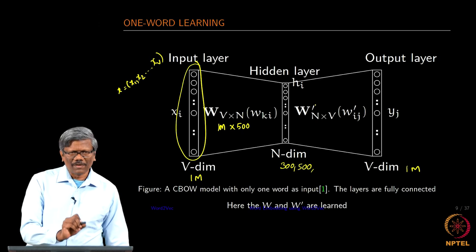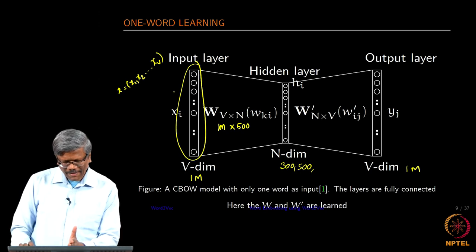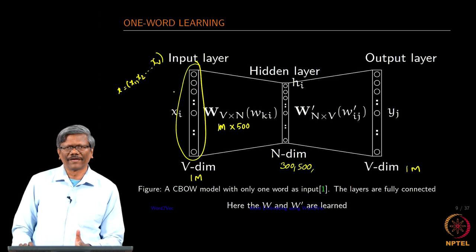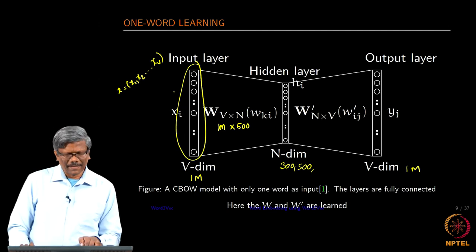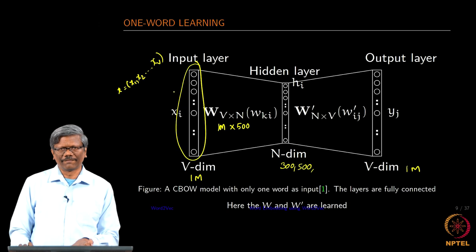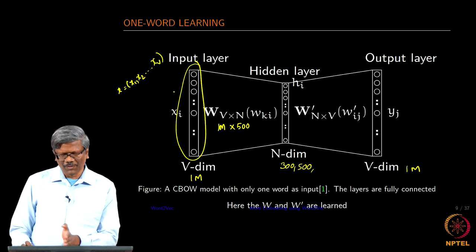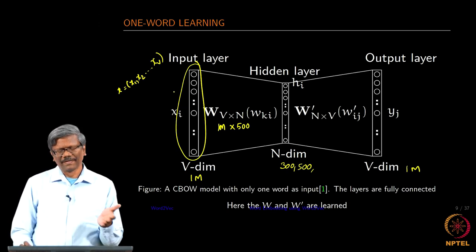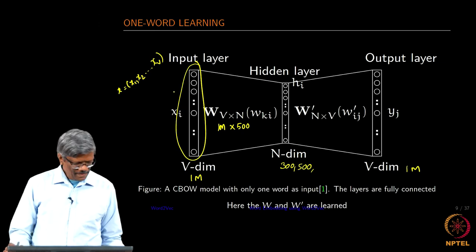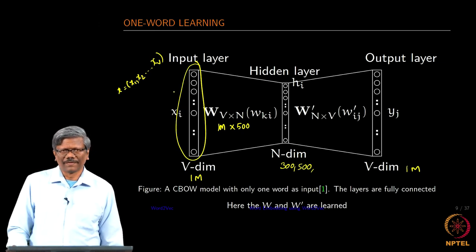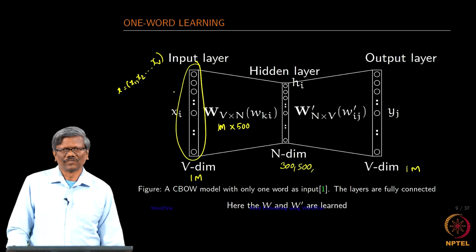As I mentioned earlier there will be only one input we will be providing at a time. One word will be input and the weights are initially randomly created and then the hidden layer is computed by using a dot product of the input layer and the weight vector. And then later the output values are computed by again doing the dot product of the hidden layer elements and the weight vectors on the output layer side. This is the simple representation of the one word learning neural network using the bag of words.